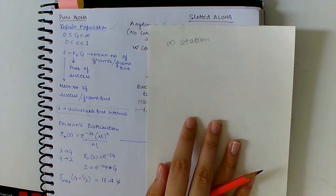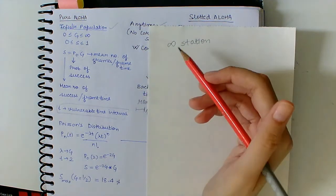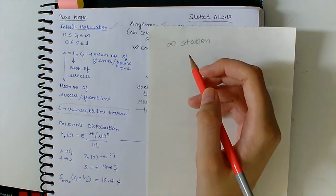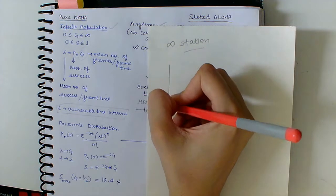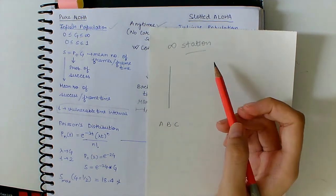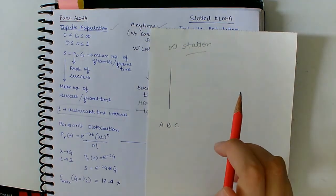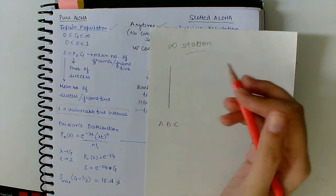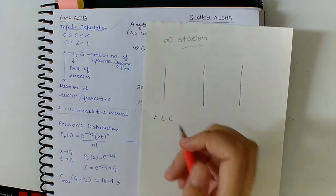So this vulnerable time interval is an important concept in case of Pure ALOHA. There is no condition as to when a station can transmit its data. For example, A, B, and C want to transmit their data on this channel, and at a time only one of them can transmit their frames.